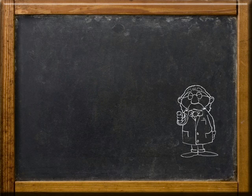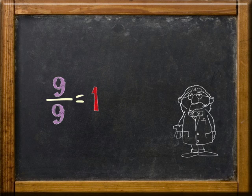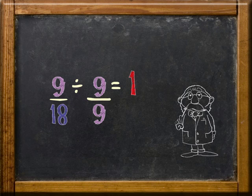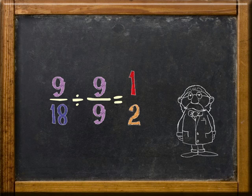That was easy. And since 9 over 9 equals 1, I can divide 9/18 by 9 over 9, and my new numerator is 1 and my new denominator is 2. So my resulting equivalent fraction is 1/2. That looks a lot better.